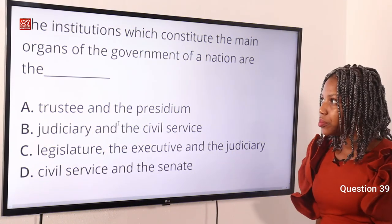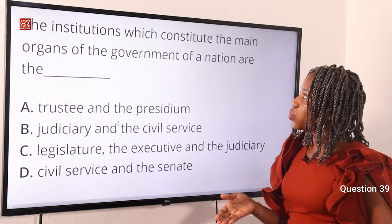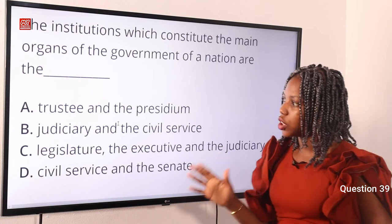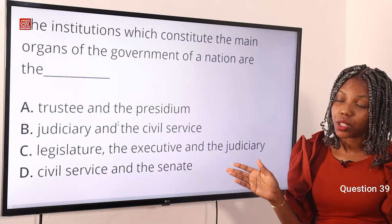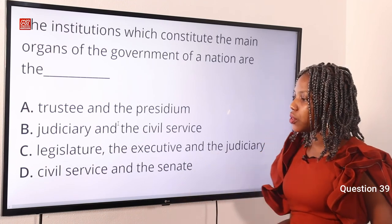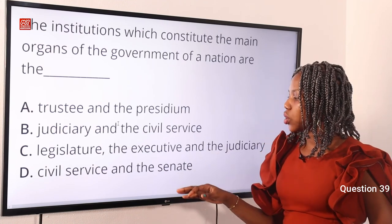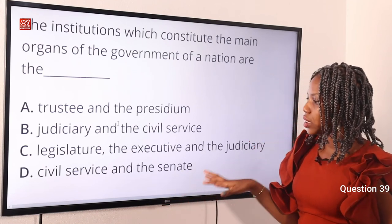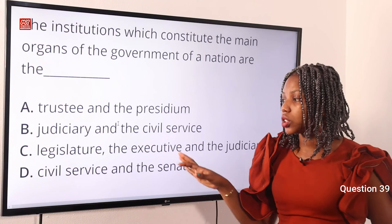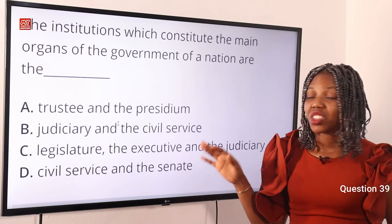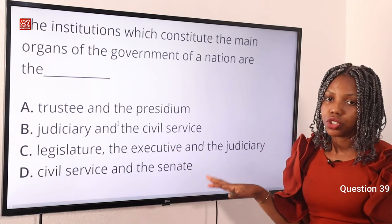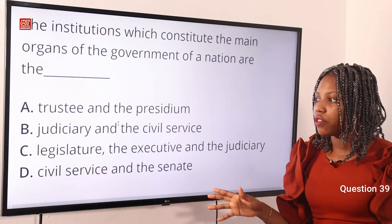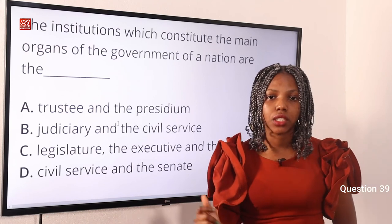Question 39. The institutions which constitute the main organs of the government of a nation are: Option A, trustee and presidium. Option B, judiciary and the civil service. Option C, legislature, the executive, and the judiciary. Option D, civil service and the senate. The answer is Option C — legislature, the executive, and the judiciary. These are the three arms of government, or the three main organs of government.